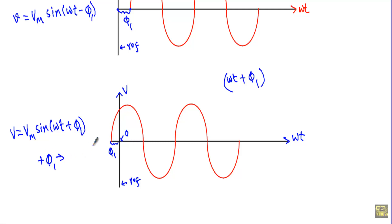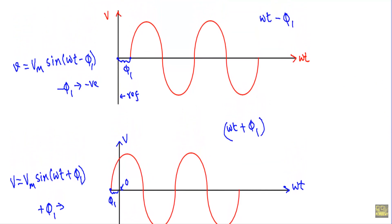If the initial phase is positive, we bring the origin of the waveform ahead of the zero position. If the initial phase angle is negative, we bring the origin of the waveform to a later point from the zero or reference axis.